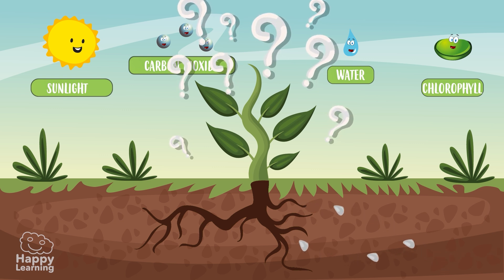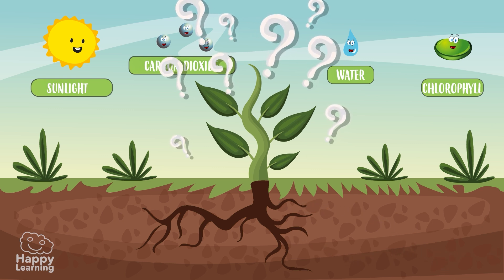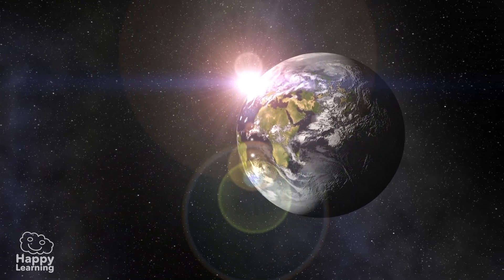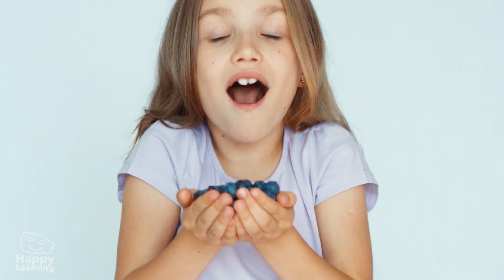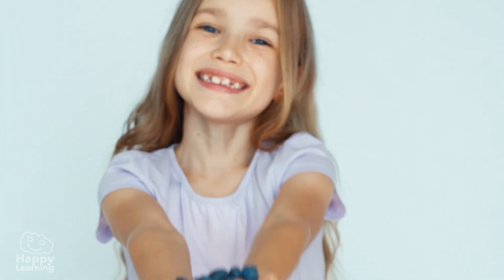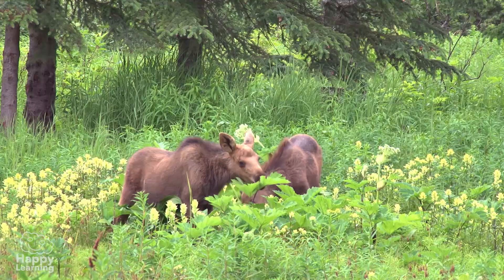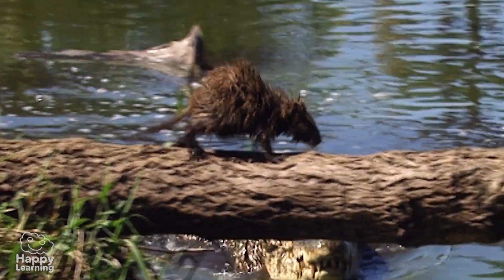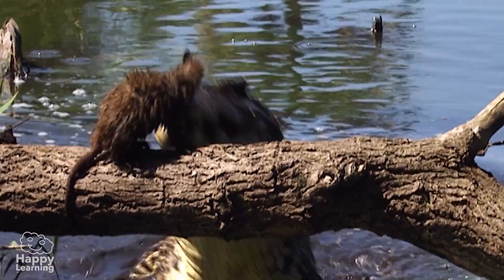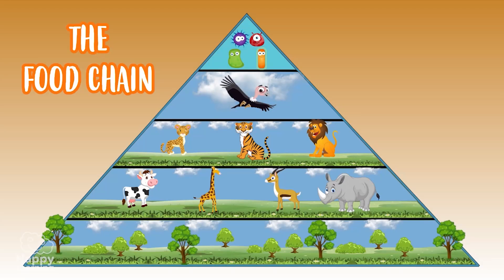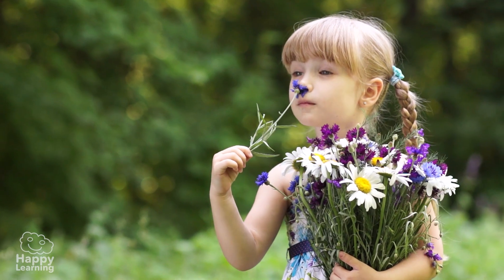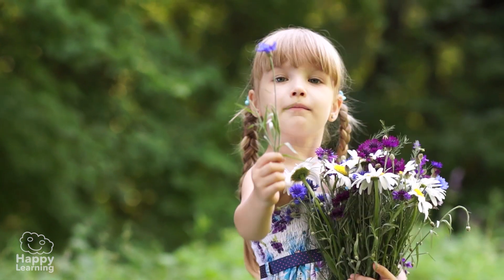But why is it so important? Without plants, there would be no life on Earth. We wouldn't have oxygen to breathe or food to feed on. You already know that herbivores eat plants and carnivores eat herbivores. Plants are fundamental for the food chain, and they are also fundamental for our respiration.